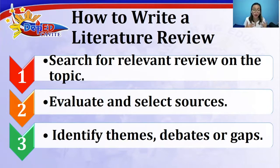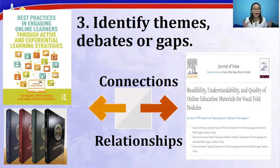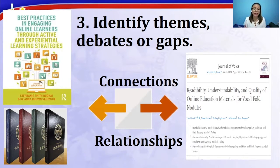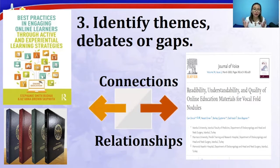That is the second step — evaluate and select sources. The third step is to identify themes, debates, or gaps. In making a literature review, for example you have a book, a published thesis or research, and an e-journal. Through all those sources, you identify the connections and relationships among them in order to synthesize, analyze, and evaluate the content of your literature review.